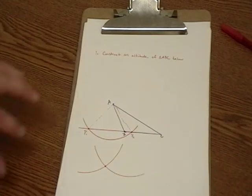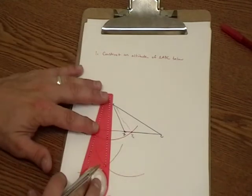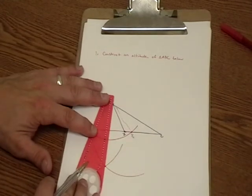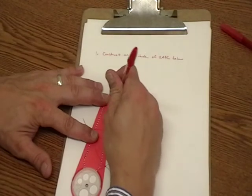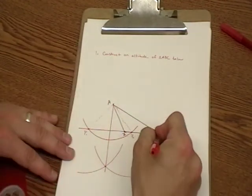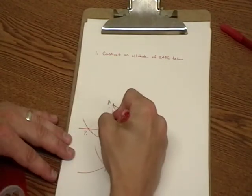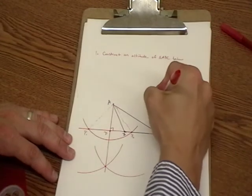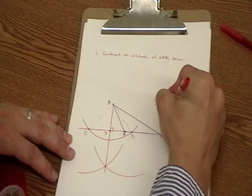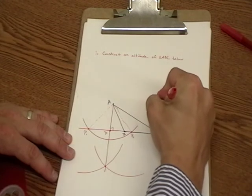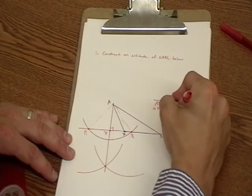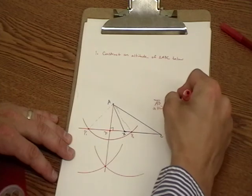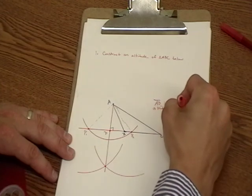If we connect A to this location, it should move perpendicular to BC extended, and that is what the altitude is. So AD is the altitude, or is an altitude of triangle ABC.